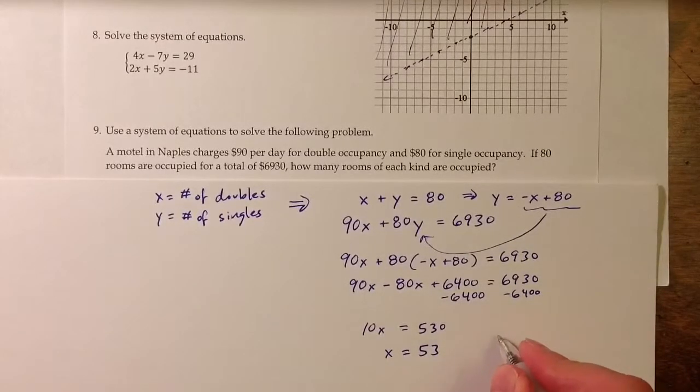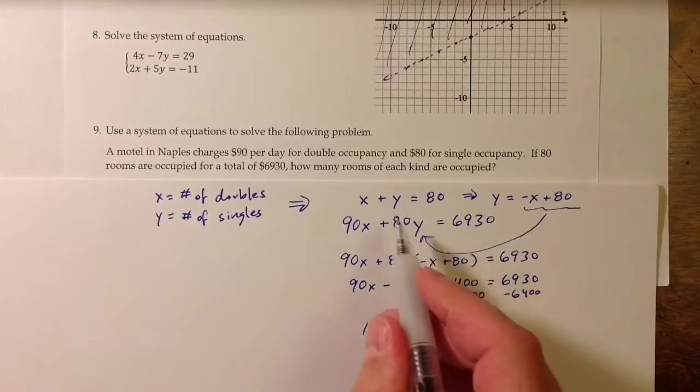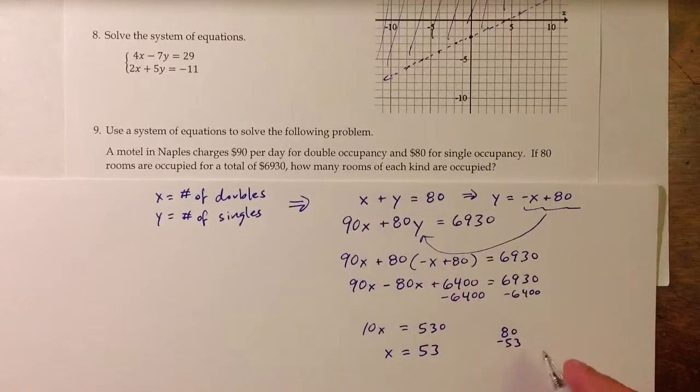Since there are 80 total rooms, if I take 80 minus 53, I think about that first equation, 80 minus 53 means that there are 27 single occupancy rooms.